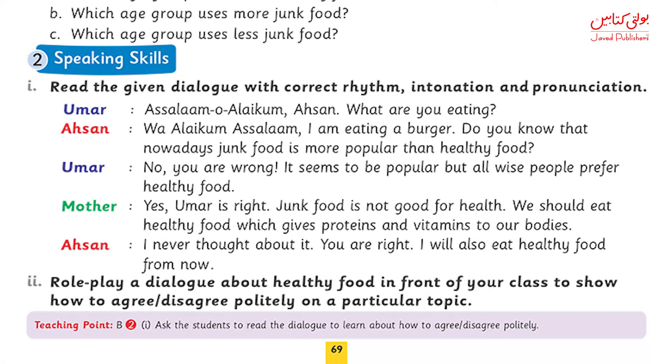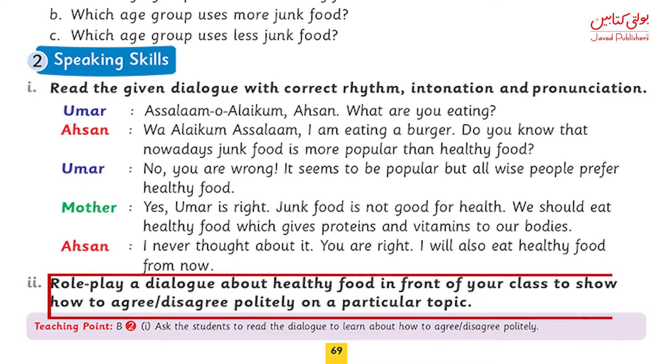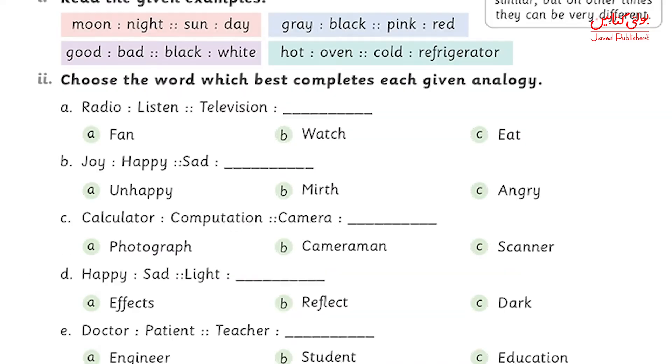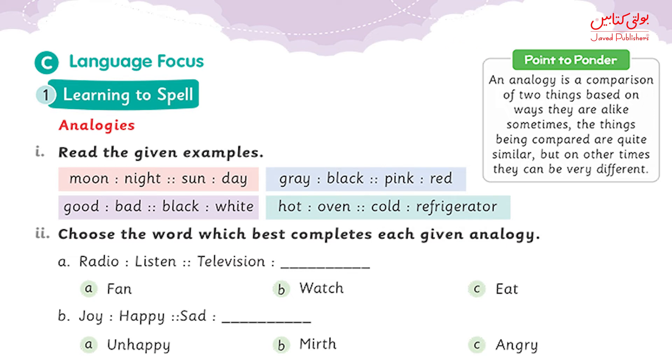In the next question, you have been asked to role play the dialogue about healthy food by using polite expressions in front of the class. On page number 70 we will be doing language focus, in which we will be talking about analogies. What are analogies? Analogies is a process — a term in which we compare two things together. This comparison can be about their sizes, shapes, colors, or relationship. For example, mother and father have the same relationship as parents. So analogies mean a comparison.